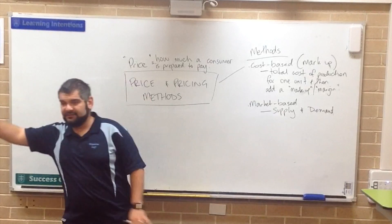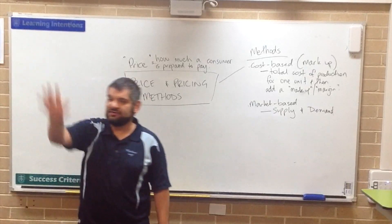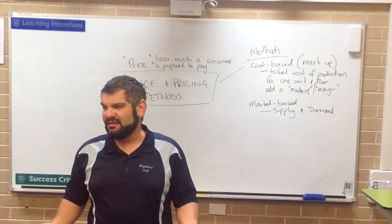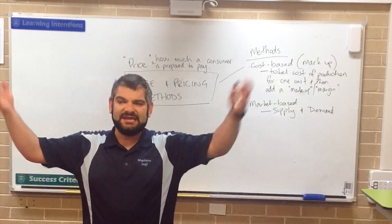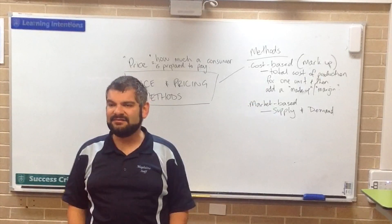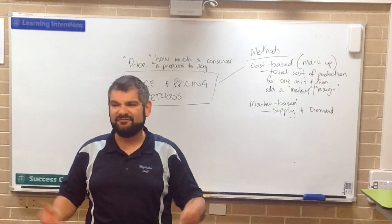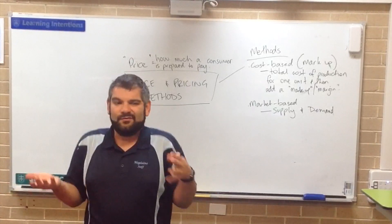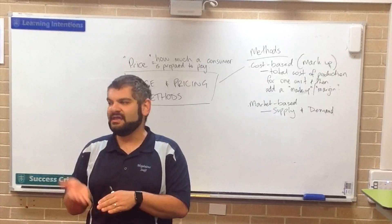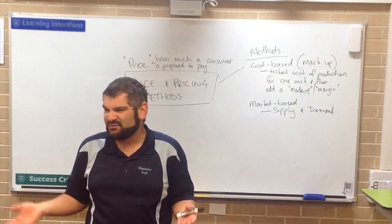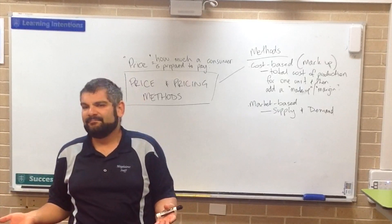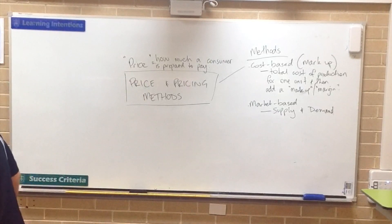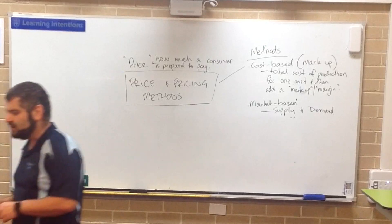If all of a sudden there's so much of something, prices go down. Because if everyone's going to end up with a t-shirt, a pen, whatever — they're worthless. If everyone's got it, why would you pay a lot of money for it if everyone's already got access to it anyway? So that's another way businesses can determine their pricing.